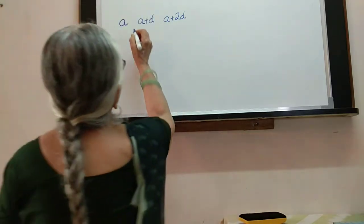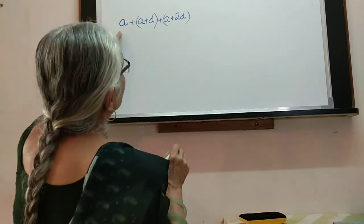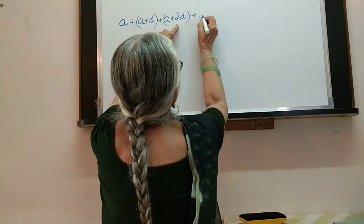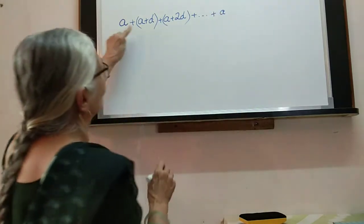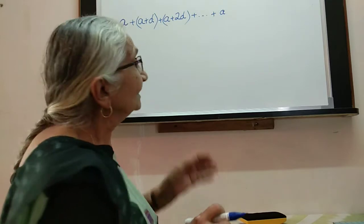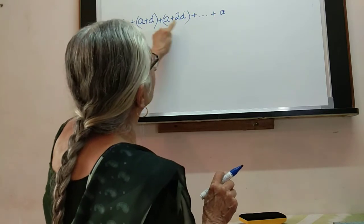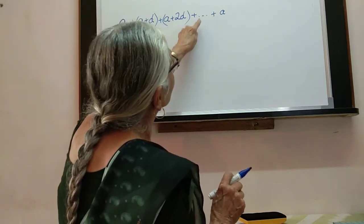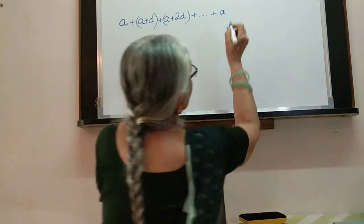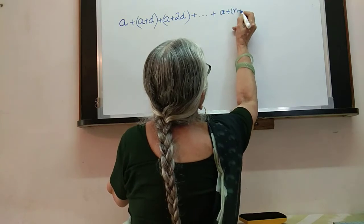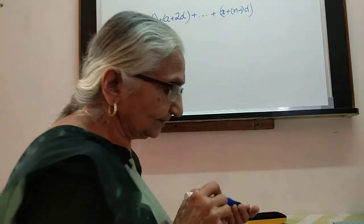We want the sum up to n terms — the first term plus second term plus third term, up to the nth term. The first term is 'a'. The number of d's added increases: zero d's in the first term, one d in the second, two d's in the third, and in the nth term it is n minus one d's. So the nth term is a plus (n-1)d.